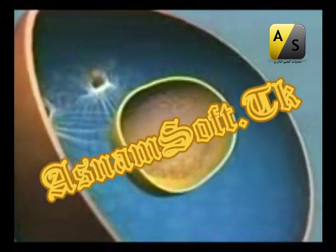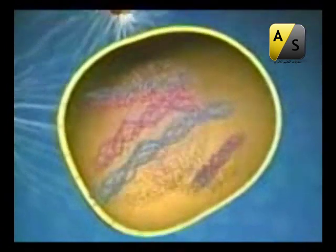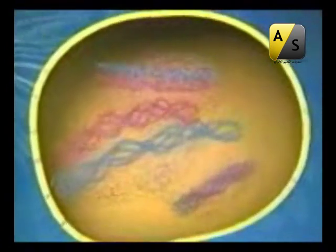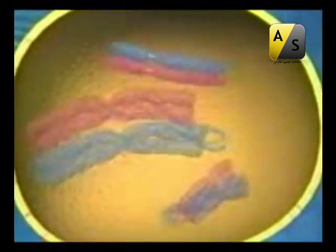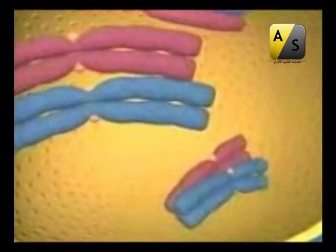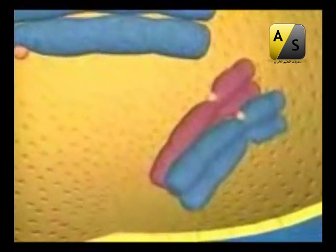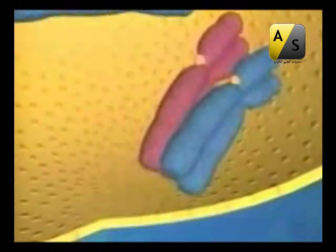The cell prepares for meiosis just as it does for mitosis. But as the DNA condenses, each chromosome finds its homologous counterpart. These matching pairs of chromosomes hold equivalent genetic information, one set from mother and one from father.